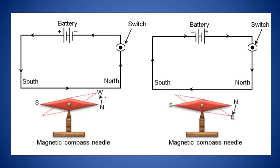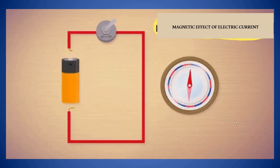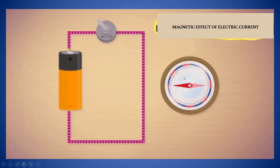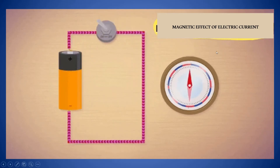When the direction of flow of electric current is reversed by changing the direction of the battery — that means the direction of flow of current is from north to south — the deflection of the compass needle also changes; it goes in the opposite direction. When the cell is reversed, it shows deflection in the opposite direction. When you switch off, the magnetic needle again comes back to its original position.